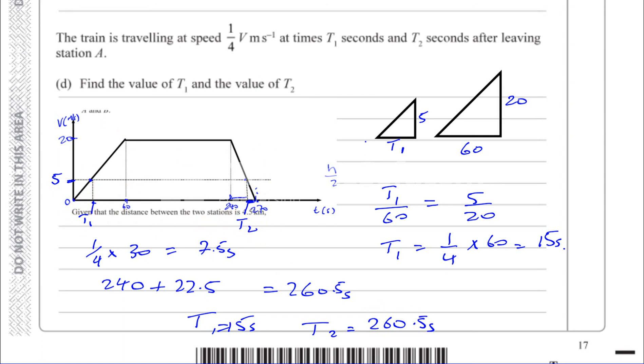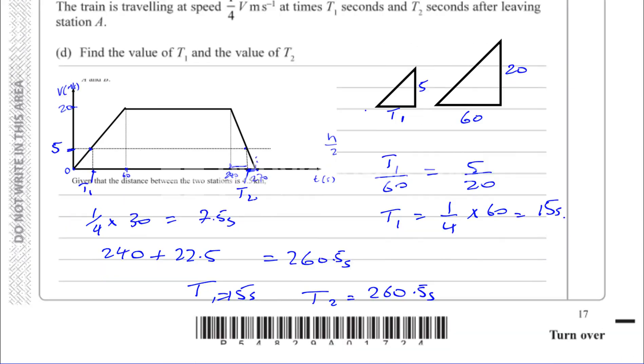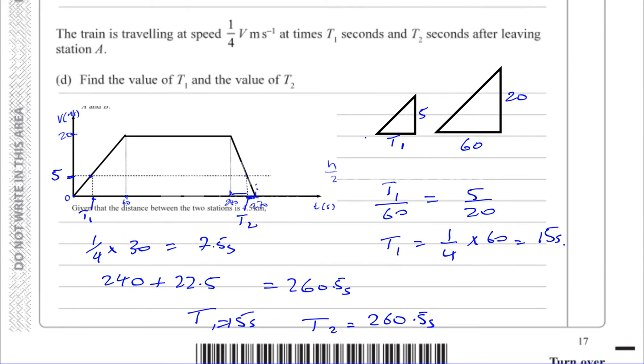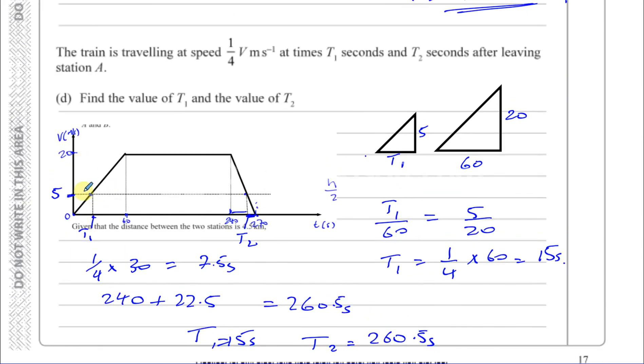Because there's constant acceleration and constant deceleration, time and speed are proportional in those sections — that's why we can use similar triangles. And that completes the whole question.